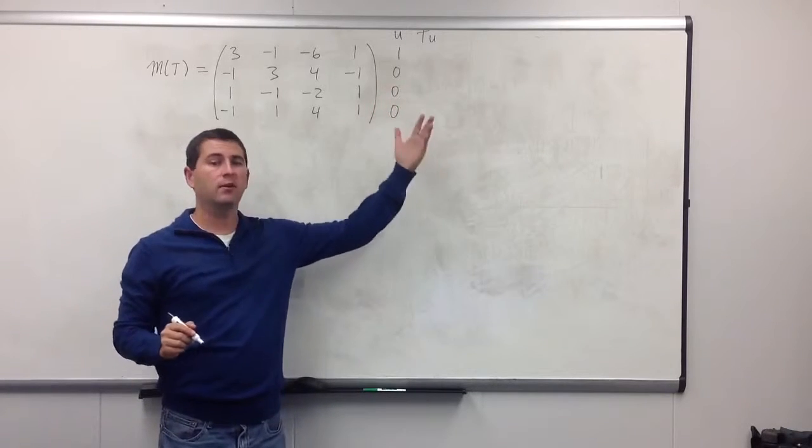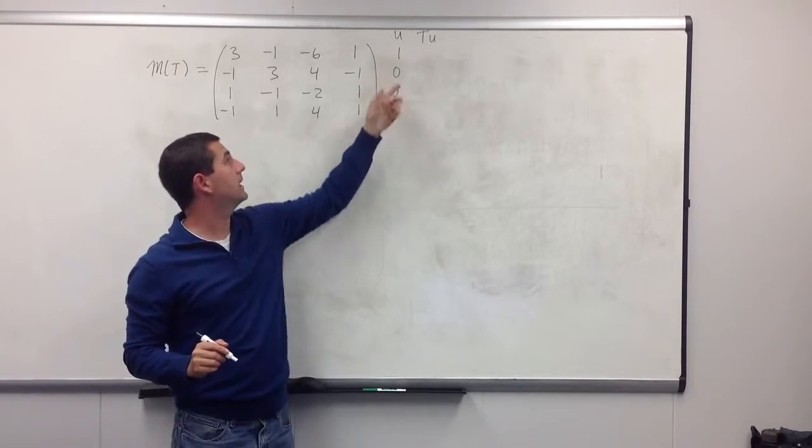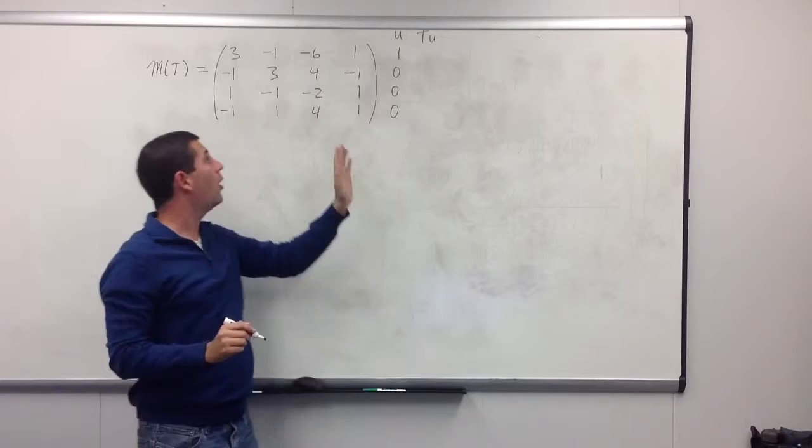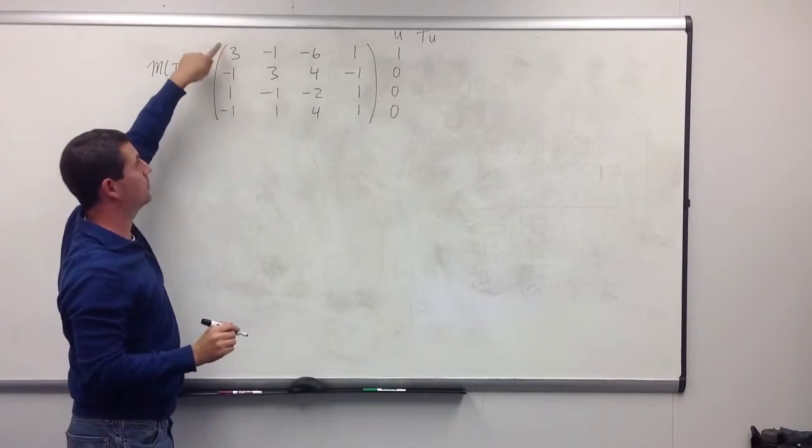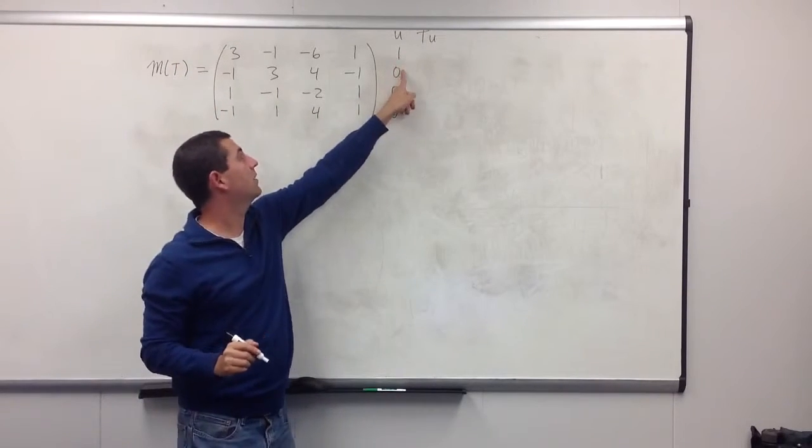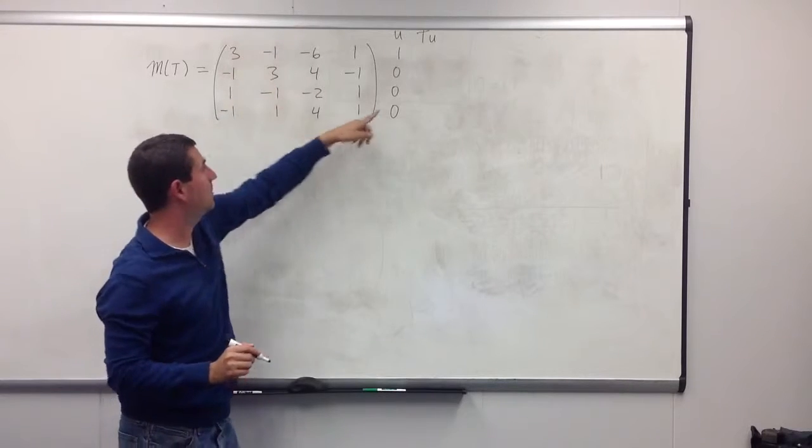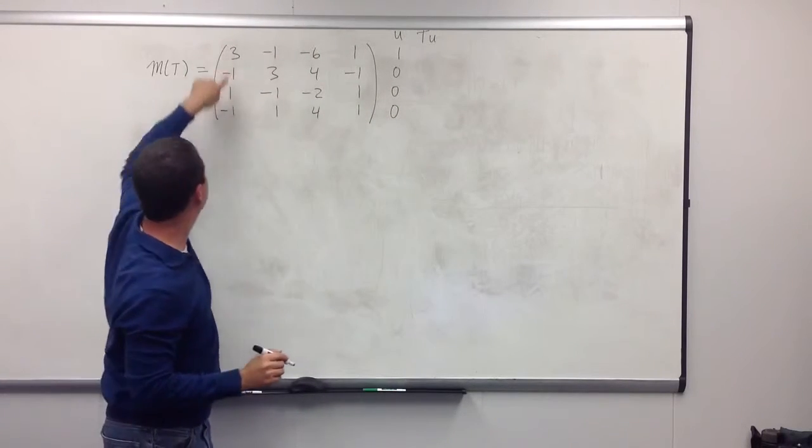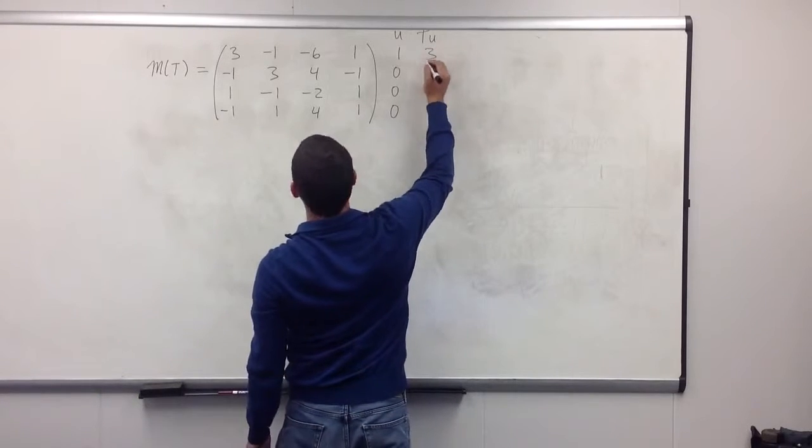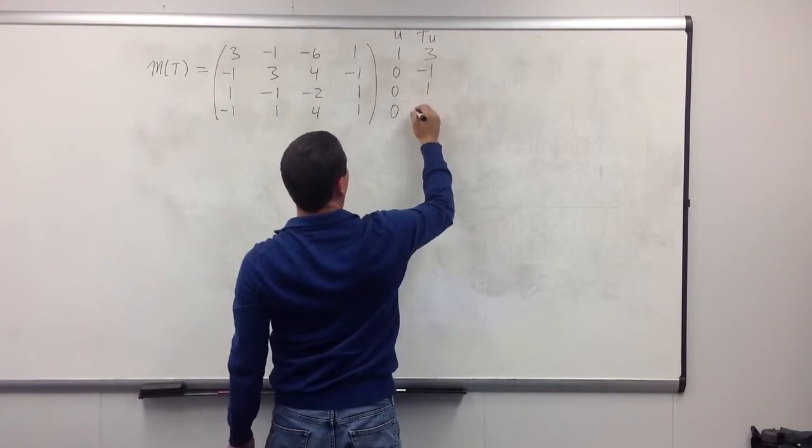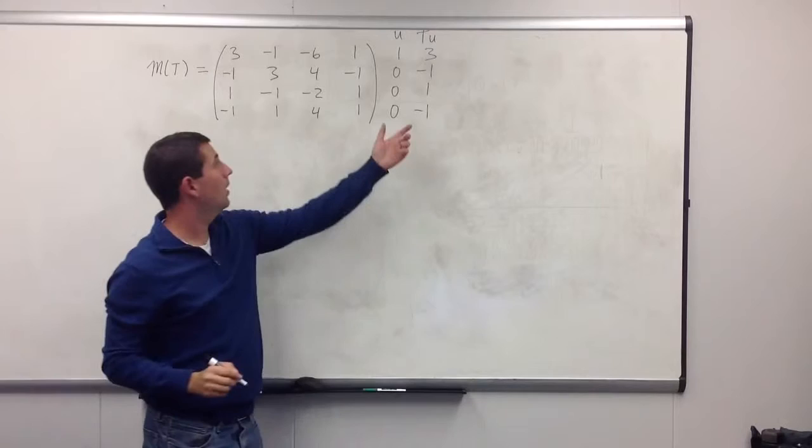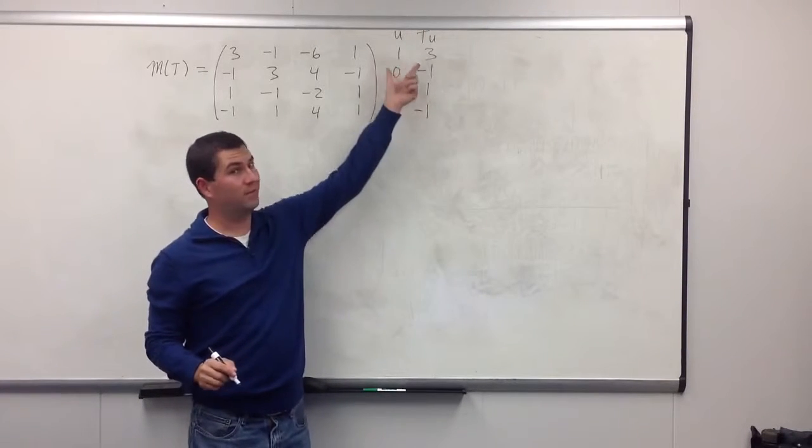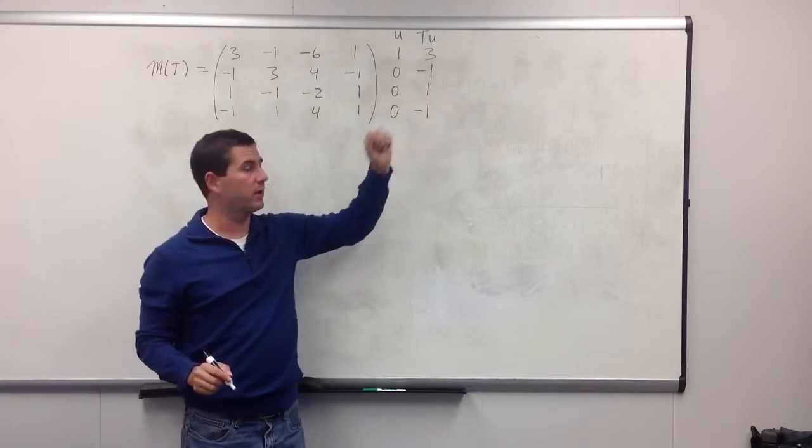And, well, one thing you might notice when you multiply by a column vector, which I have 1 in the first component, all it's going to do is rip out the first column. If we put this 1 in the second component, it will take the second column, third to the third, fourth to the fourth. So we just pull this first column out here, 3, negative 1, 1, negative 1. A little easy inspection tells you these are not linear combinations of each other.